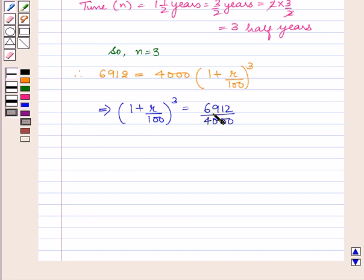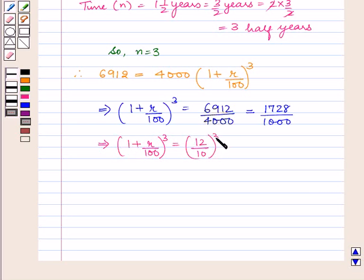Both 6,912 and 4,000 are divisible by 4 and we obtain 1,728 upon 1,000. This implies 1 plus R upon 100 raised to power 3 equals 12 upon 10 raised to power 3, as 1,728 is the cube of 12 and 1,000 is the cube of 10.